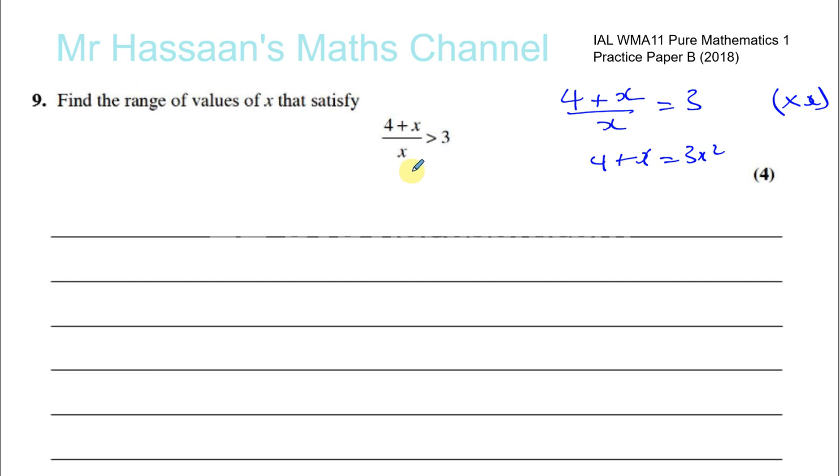We're not aware of what x is in terms of its sign. It could be a positive number, it could be a negative number. We don't know, it's unknown. And we should know by now that when we multiply an inequality by a negative number, the direction of the inequality sign must change. So if we multiply by x, not knowing whether it's positive or negative, it's possible that we're going to make a mistake.